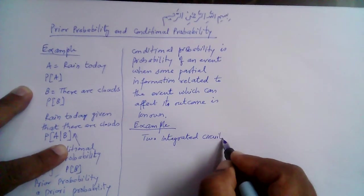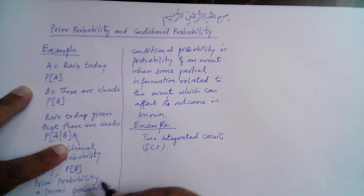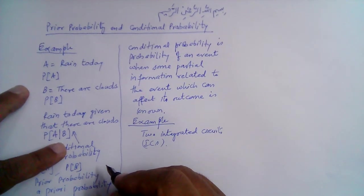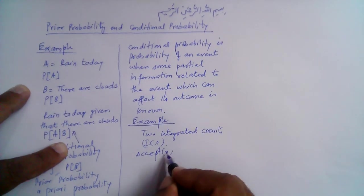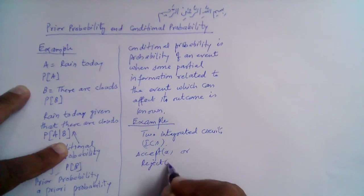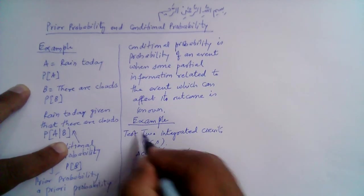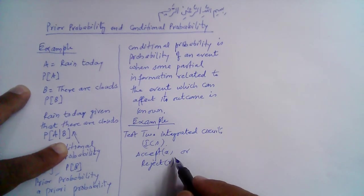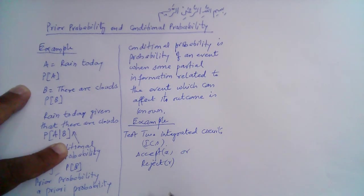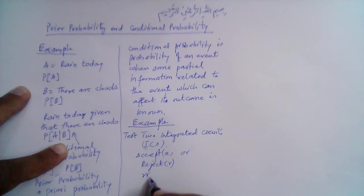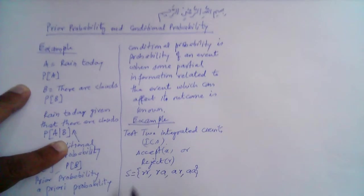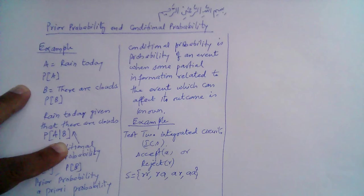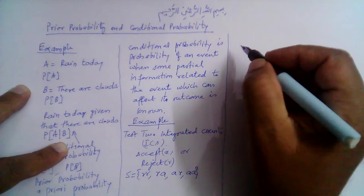We are interested to test the integrated circuits whether they are acceptable or not. We test each integrated circuit and the outcome is either accept or reject. Since we are testing two circuits, the possible outcomes are: both rejected, first rejected and second accepted, first accepted and second rejected, or both accepted. This is basically the sample space of this experiment.